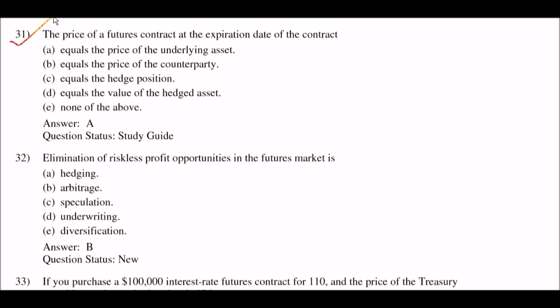Next question: the price of a futures contract as the expiration date of the contract — option A: equals the price of the underlying asset; option B: always equals the price of the counterparty; option C: always equals the hedge position; option D: always equals the value of the hedge asset; option E: none of the above. The right answer is option A: equals the price of the underlying asset.